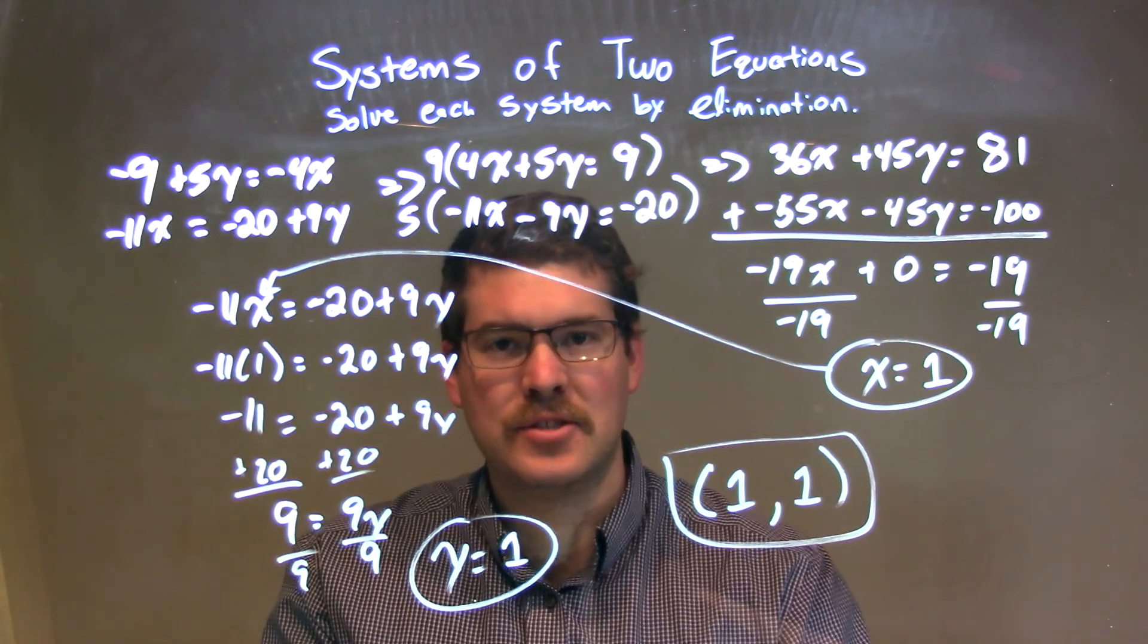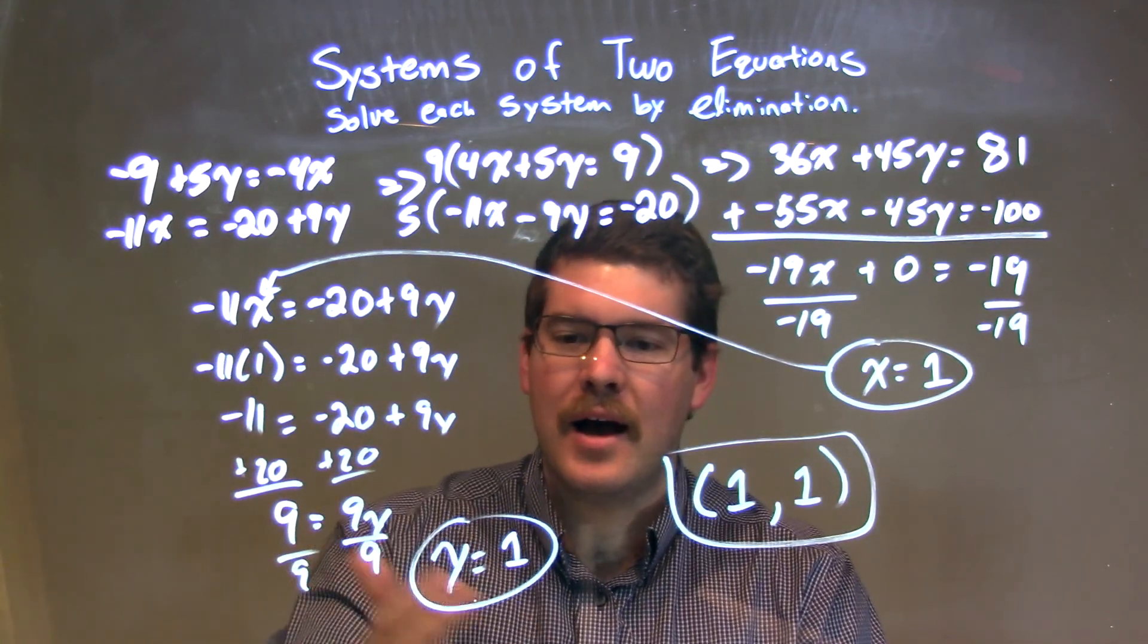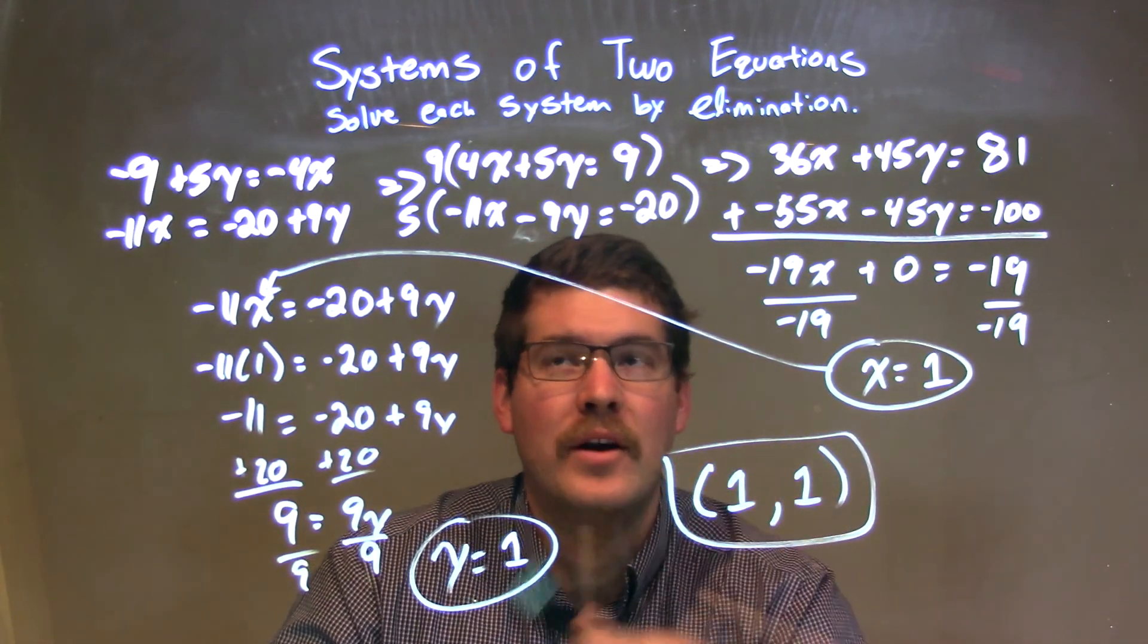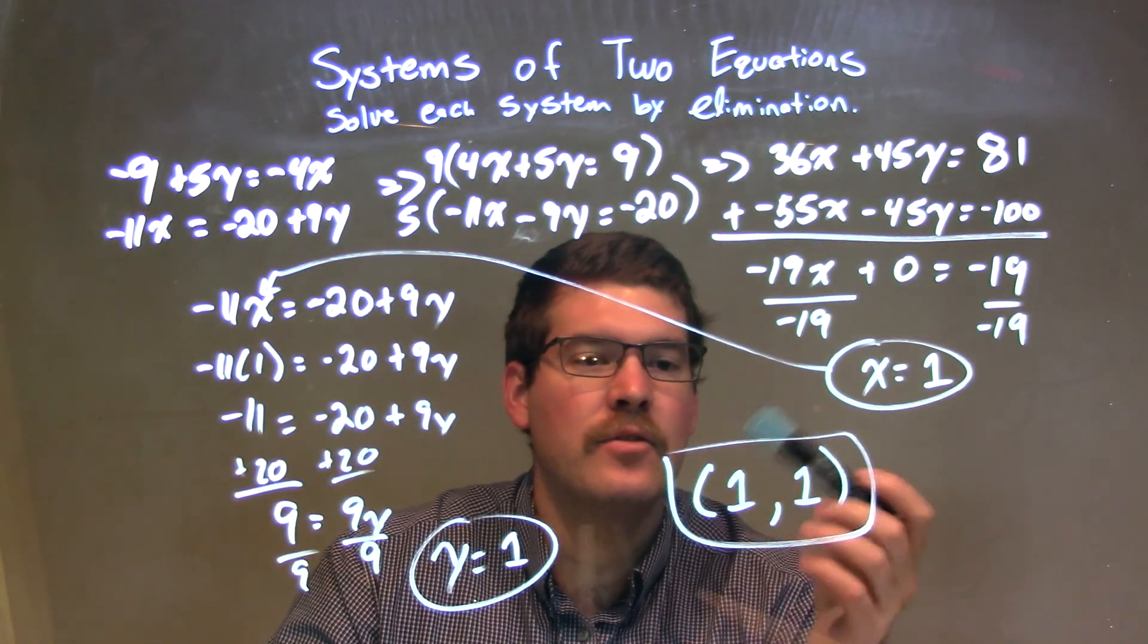Plugged that into my second equation to solve for y. When I simplified, I got y to be 1 as well. So our final answer as a coordinate point for our system of equations solving by elimination is (1, 1).